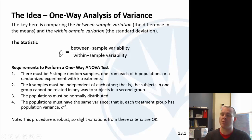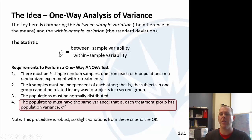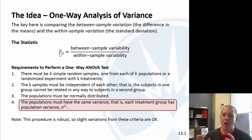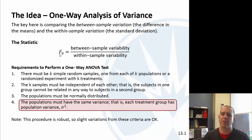Luckily, this test is robust, so some slight variations from these requirements are okay. For the variance requirement, the general guideline is that as long as the largest variance isn't more than double the smallest variance, that's generally acceptable. You could also perform an F test from chapter 11 to compare all the different possible variance combinations and check that. But the rough guideline is: if the largest variance is no more than twice the smallest variance, you're okay.